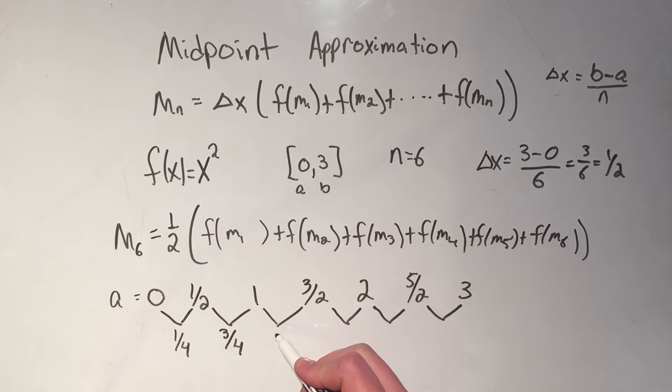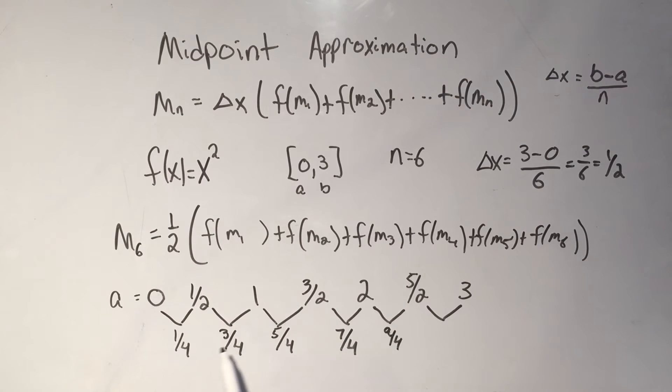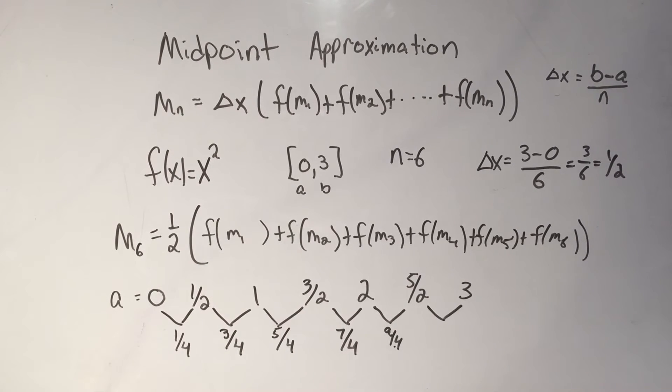1 plus 3 halves divided by 2, I think that's going to be 5 fourths. The average between 3 halves and 2, I think that's going to be 7 fourths. The average between 2 and 5 halves, that's going to be 9 fourths. And you can notice here that these are actually all jumping by a half as well.